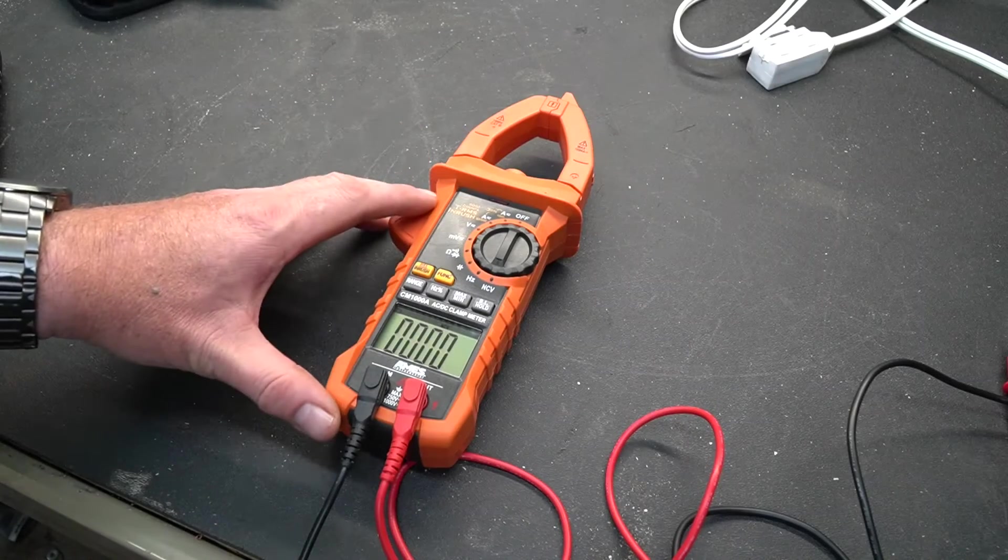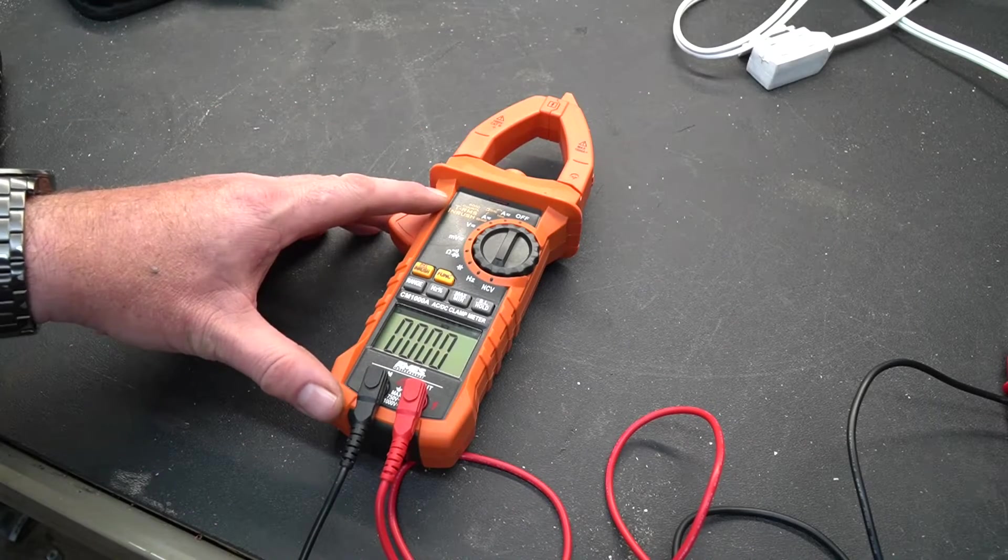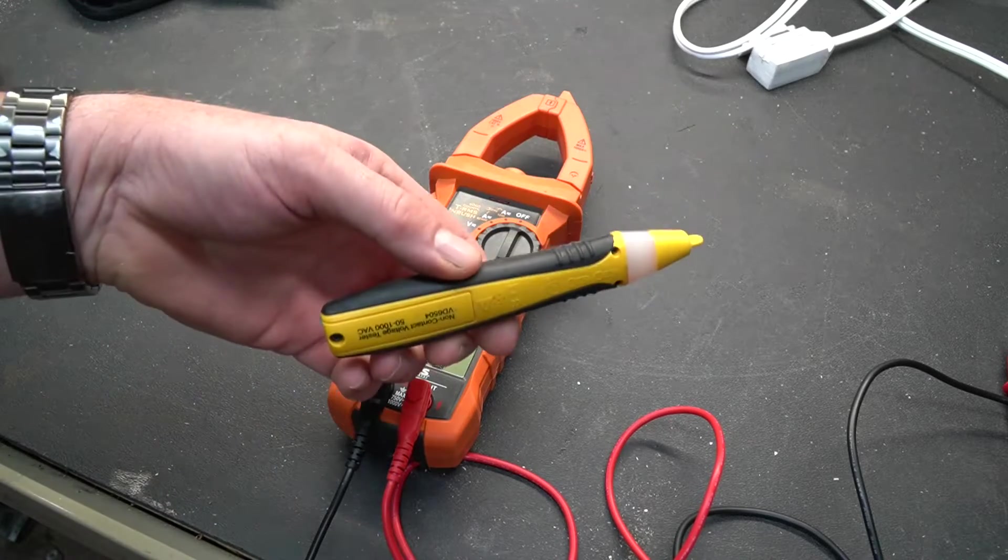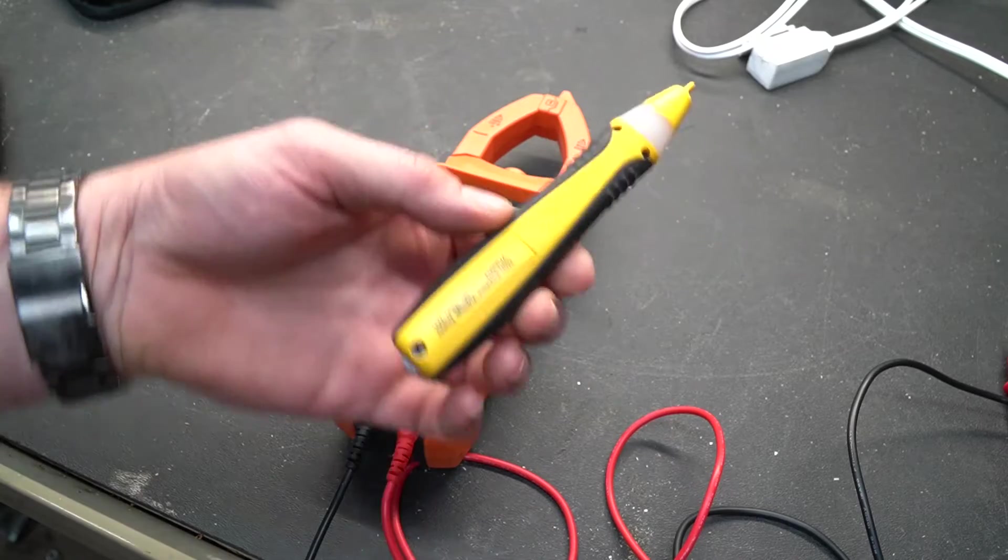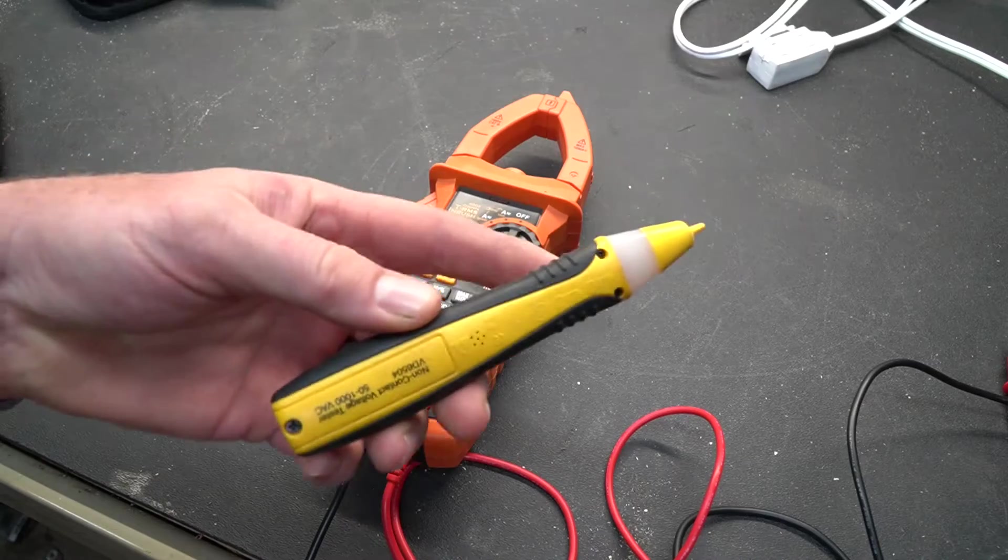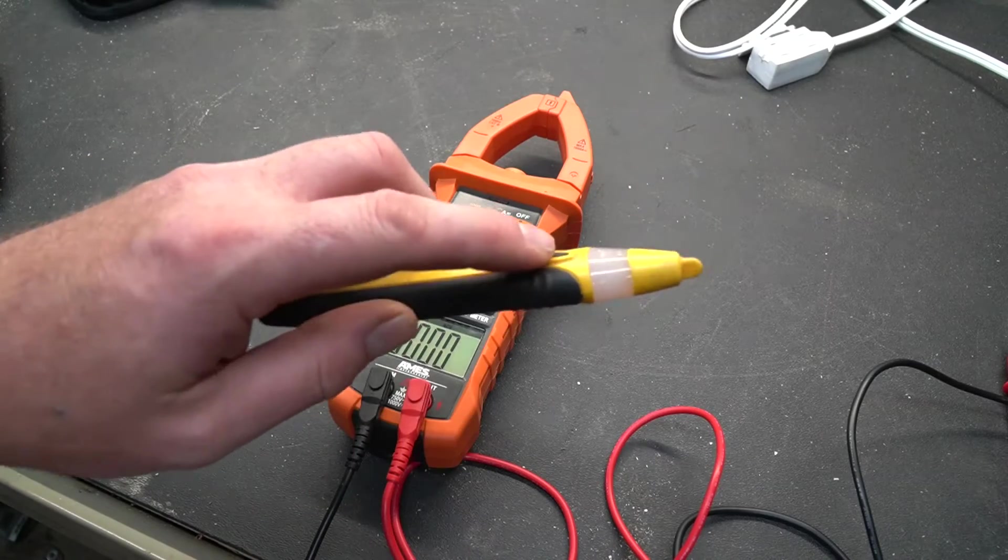Now one thing I was pleasantly surprised to see that this meter had was a built-in non-contact voltage detector. Now basically what that is is one of these guys built into the end of the meter. If you don't know what these guys are they basically have a little button on them and when you get them near voltage they will sing and let you know that the current is live in that particular device.